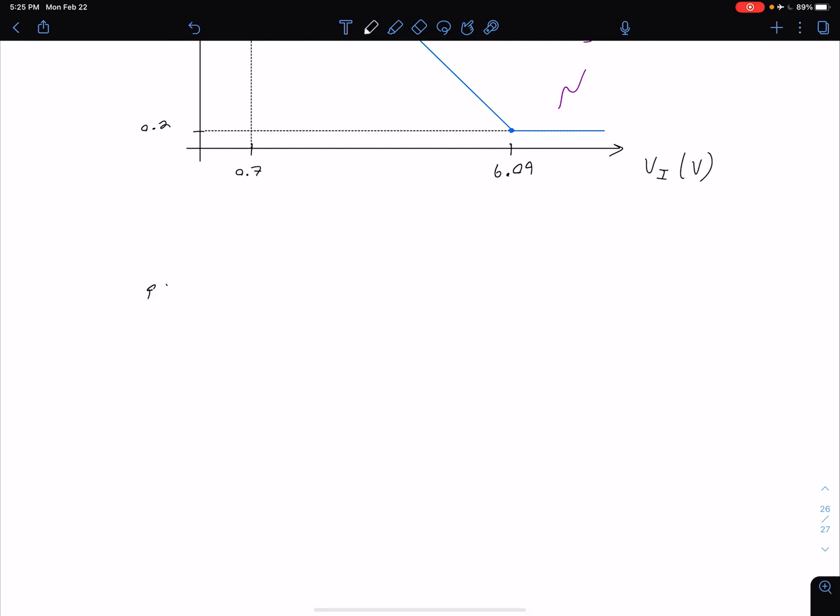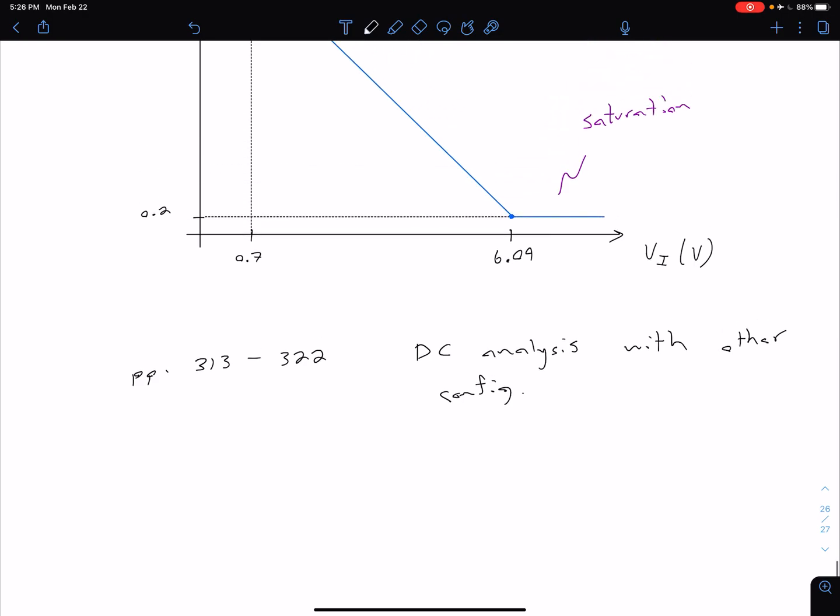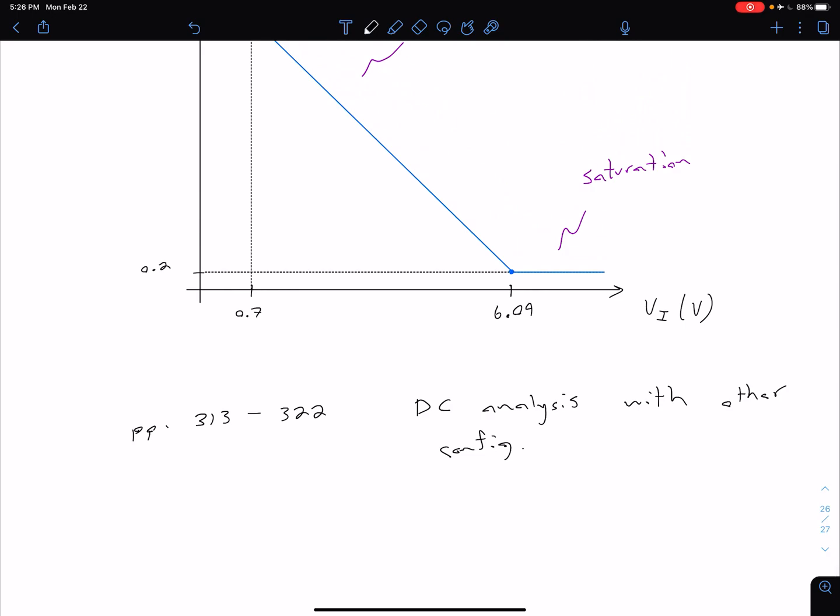If you want to see some more examples with different types of circuits - we've kind of focused on our common emitter circuit here - for more examples you can look on page 313 to 322 in the textbook. This is just showing DC analysis with other configurations. The reason I don't want to spend too much time going through those is we're going to come back and deal with these a lot as we're looking at our BJT amplifiers.